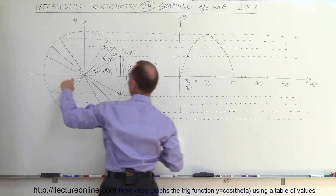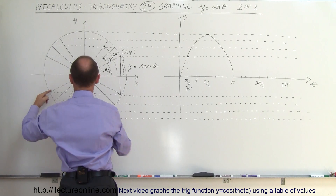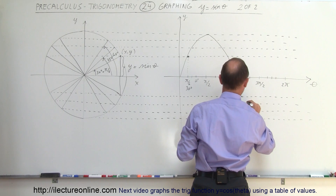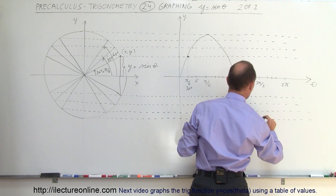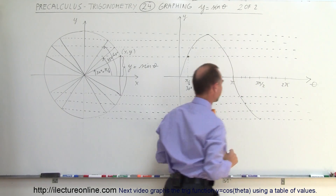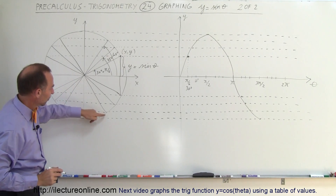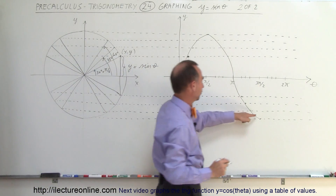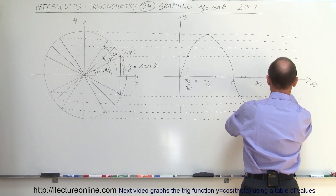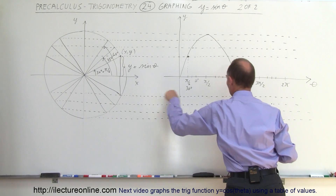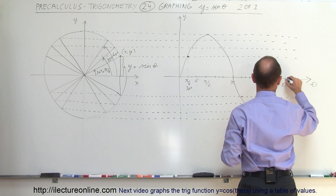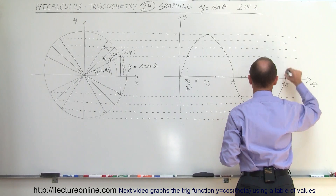Continuing on below the x-axis, this point on the unit circle corresponds to this point on the graph. For the next point we're over here, the next point we're over there, and at a 270 degree angle we're over here. The graph continues like this, and finally the last few points — this point corresponds to this one on the graph, the next one corresponds to this point, and the next one to this point, until we're all the way around the circle and back to the start.